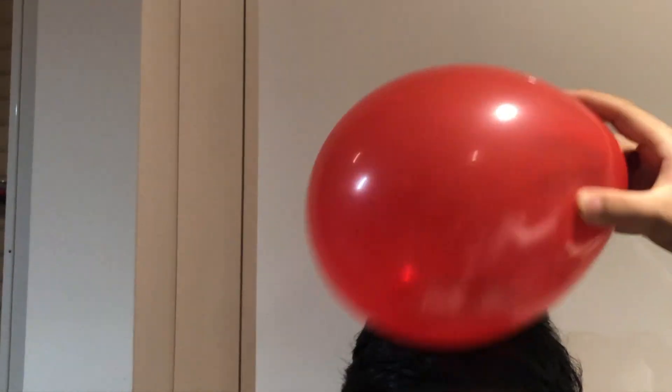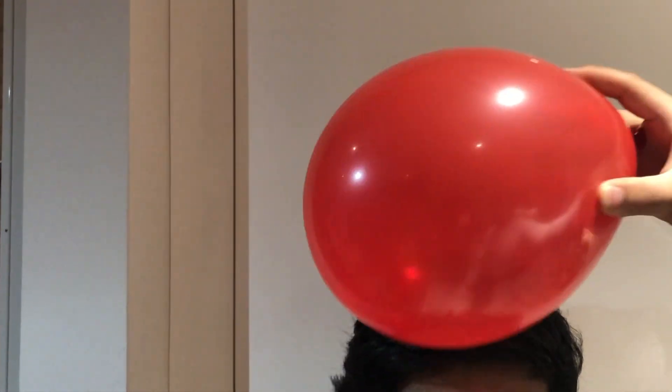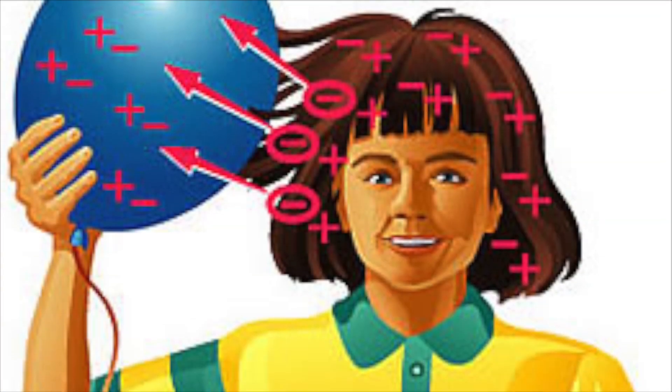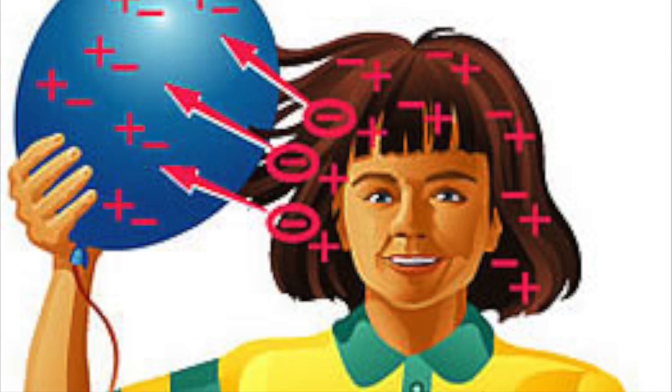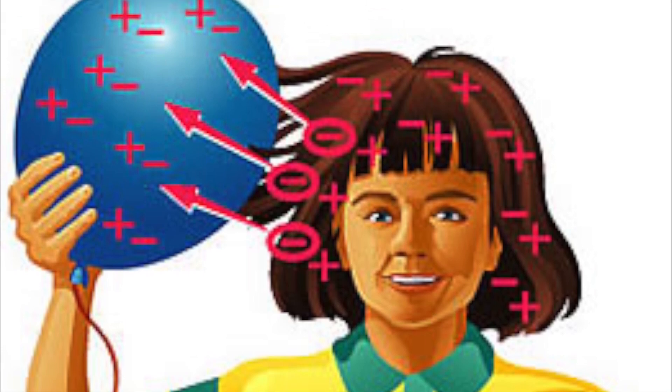When you rub the balloon on your dry hair, static electricity is produced. While rubbing, your hair loses electrons, therefore it has a positive charge. Then electrons move from your hair to the balloon, which is why the balloon has a negative charge.